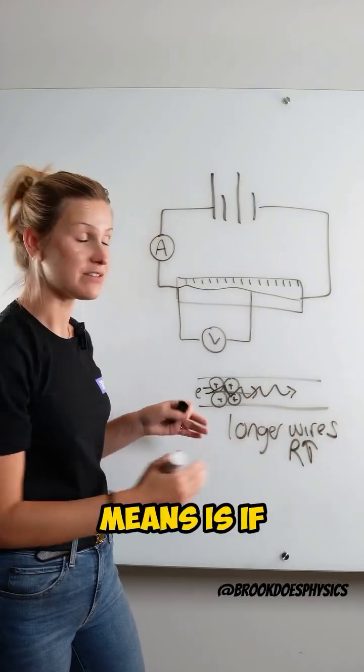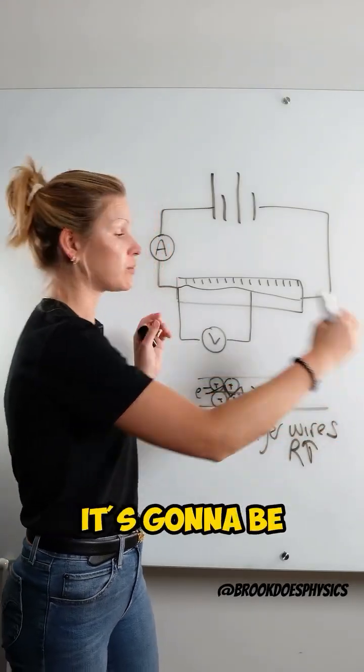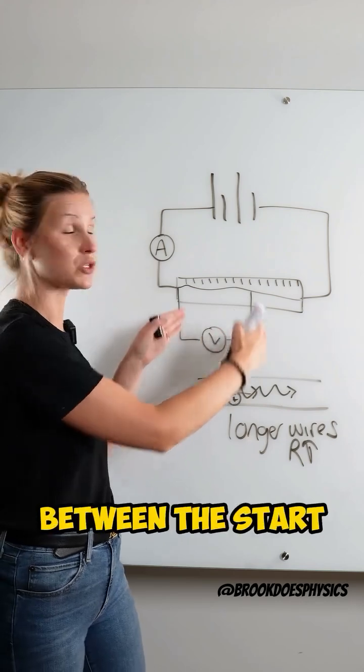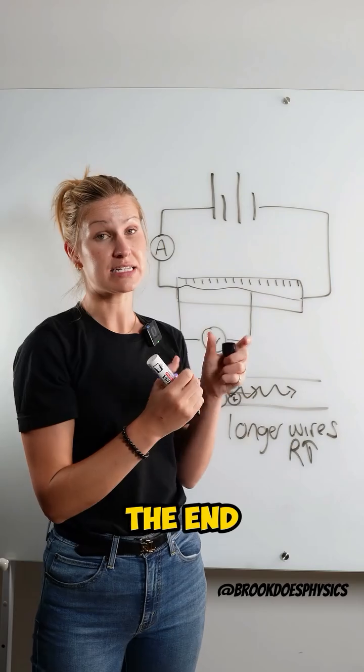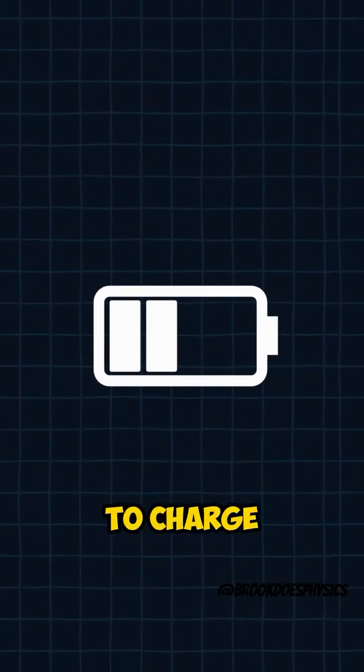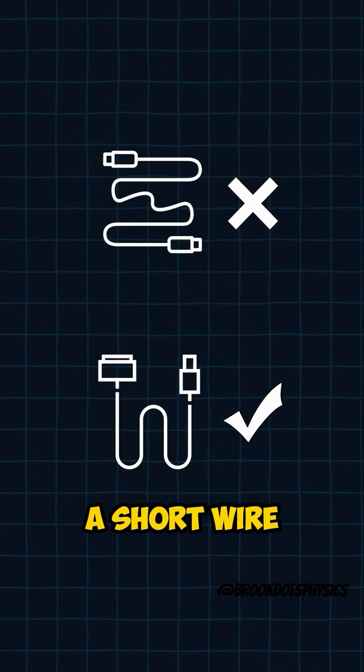So what that means is if I've got a really long wire, there's going to be a big potential energy drop between the start of the wire and the end of the wire. So if my phone is at the end, that means it's going to take a really long time for my phone to charge, which is why I should use a short wire.